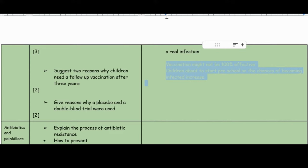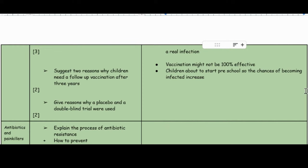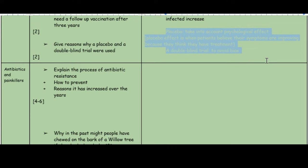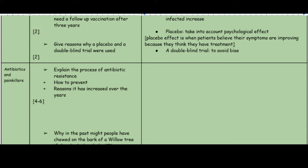The vaccination might not be 100% effective, and children are about to start preschool so the chances of becoming infected massively increase. Give reasons why a placebo and a double blind trial were used: a placebo takes into account the psychological effect — the placebo effect is when patients believe their symptoms are improving because they think they've had treatment when they have not. A double blind trial is used to avoid bias from doctors.